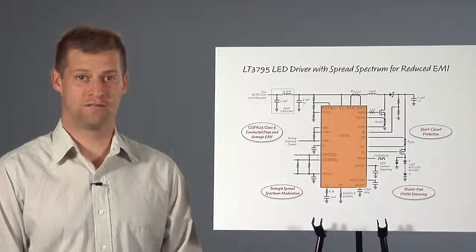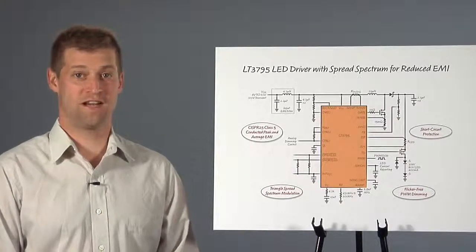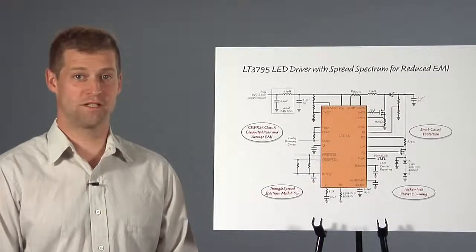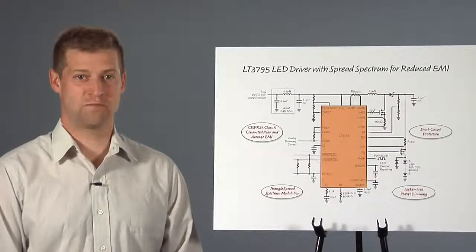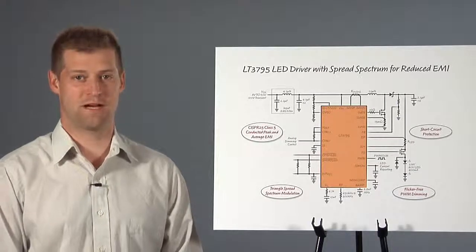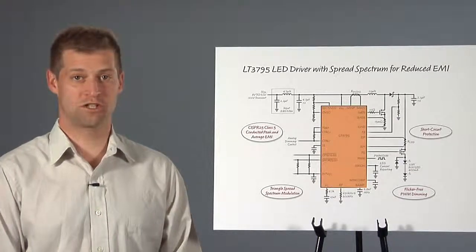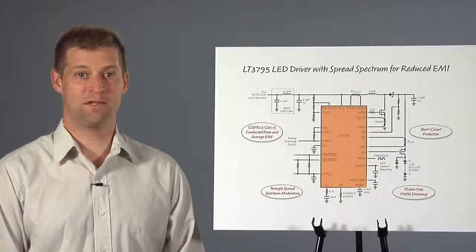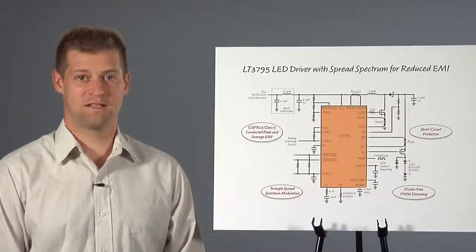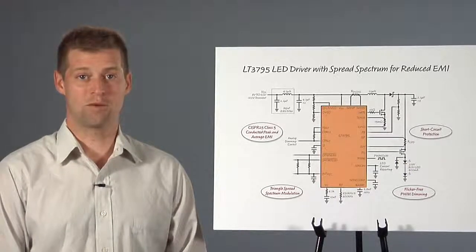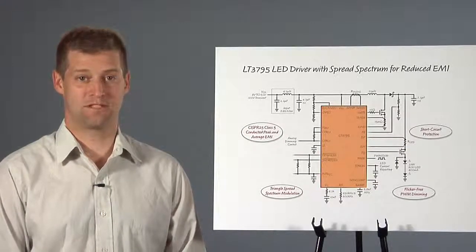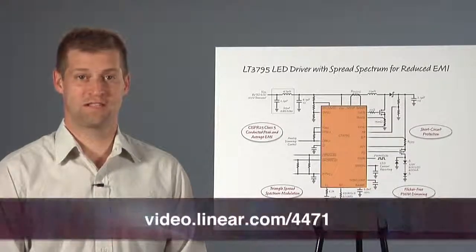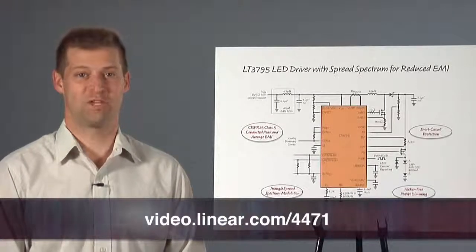In conclusion, the LT3795 is a high-voltage, flicker-free LED driver with spread-spectrum modulation that reduces EMI. It has short-circuit protection, and it can be used as a step-up, step-down, or buck-boost LED driver in automotive and industrial applications. Please visit us at Linear.com for more information. Thank you.